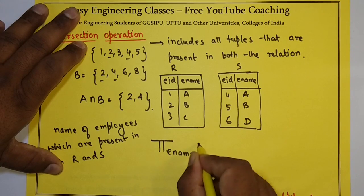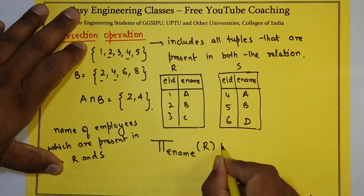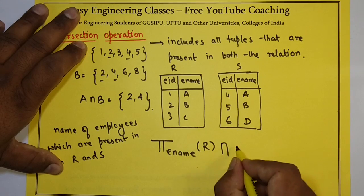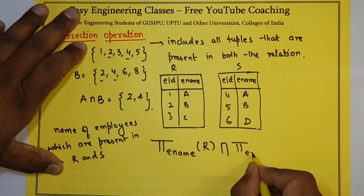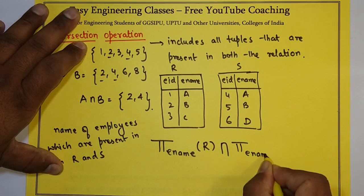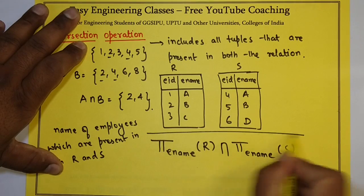Pi Ename R, intersection, Pi Ename S. We apply the projection operator on Ename from relation R, then intersection, then projection on Ename from relation S.